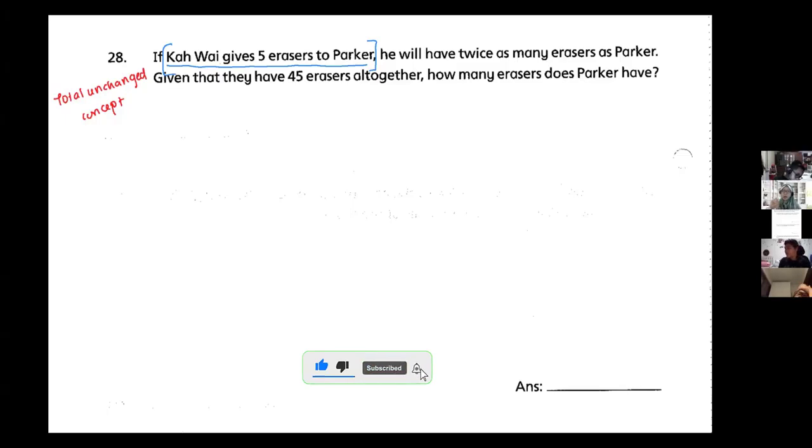So Kawai gives to Paka, Paka gets from Kawai. When the change is between one another, the change is between the two items, it is known as Total Unchanged Concept. So change is between each other.